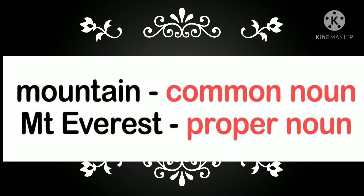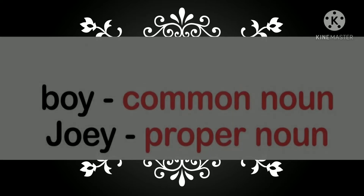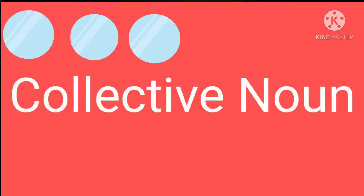Let us do the difference between proper and common noun. Look at these examples: Mountain — mountain is a common noun, kyunki yahan hume clear nahi kiya gaya ki koon se mountain ki baat ki gayi hai. Mount Everest — that is a proper noun, kyunki yahan bataya gaya ki which mountain. Second: boy is a common noun, and Joy is a proper noun because Joy is the name of a person.